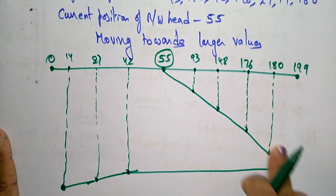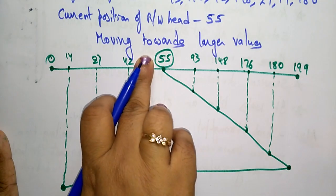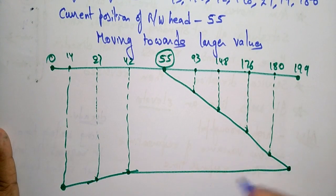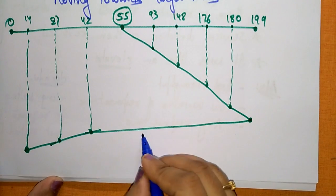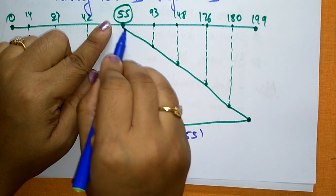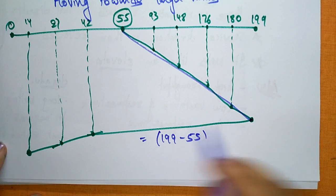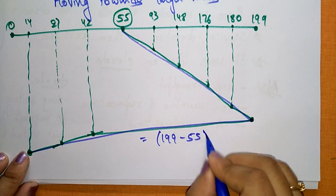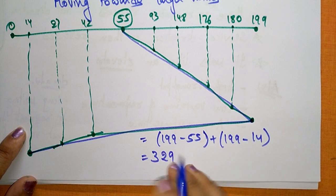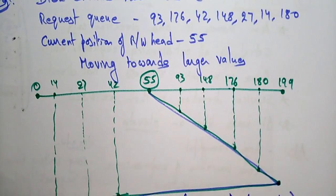This is how the SCAN algorithm works. The total number of track movements by the read/write head: from 55 to 199 is 199 minus 55, and then from 199 back to 14 is 199 minus 14. Adding both gives 329. The total number of track movements by the read/write head using the SCAN algorithm is 329.